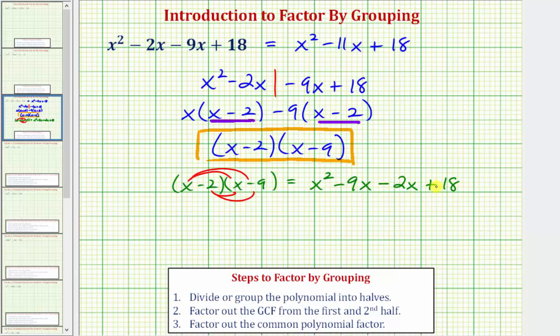Notice how this expression is equivalent to the given expression, even though the two middle terms are in a different order. If we took it one more step and simplified completely by combining like terms, we'd have x², and again, -9x - 2x is -11x, so -11x + 18, which we know from above is equivalent to the given expression. So we verified this is factored correctly.